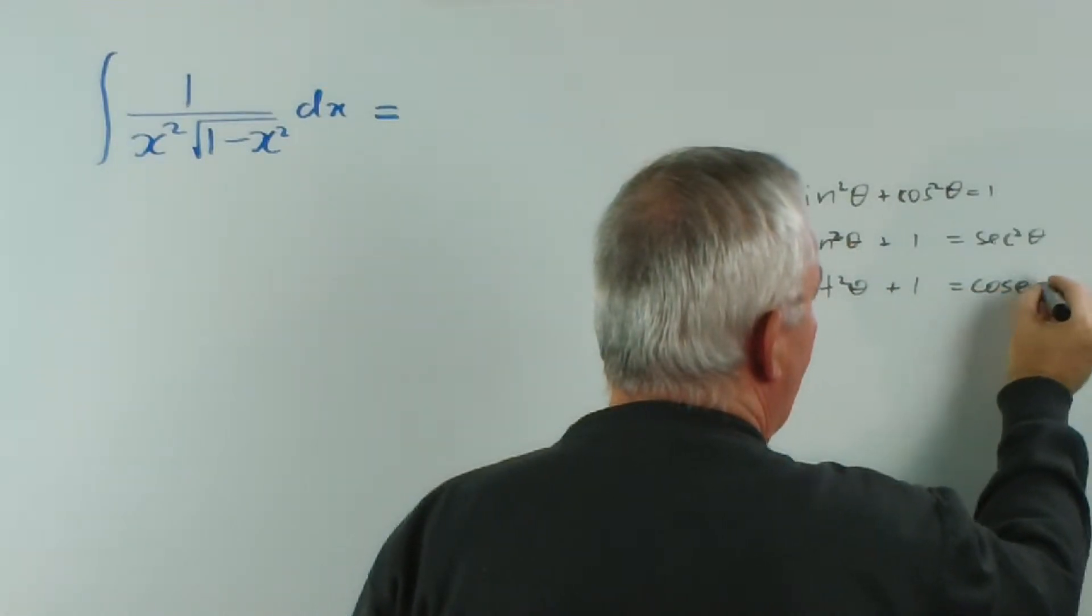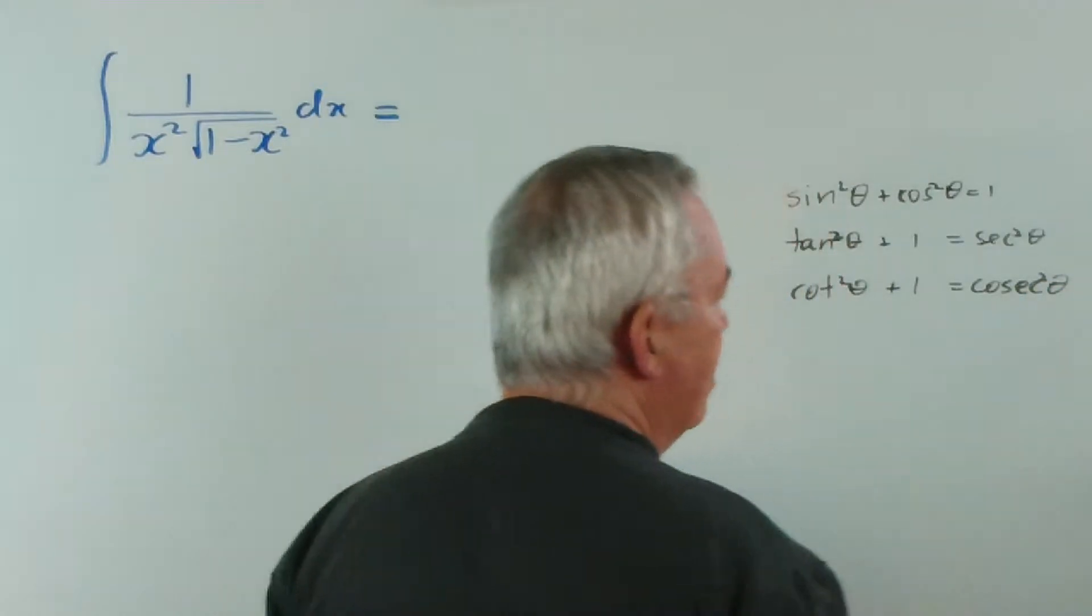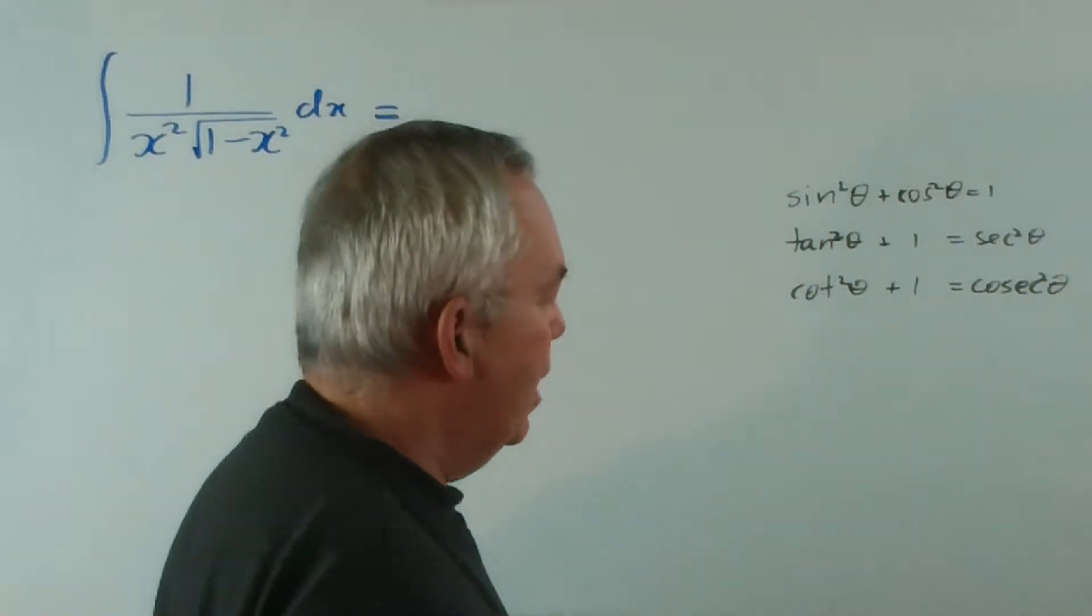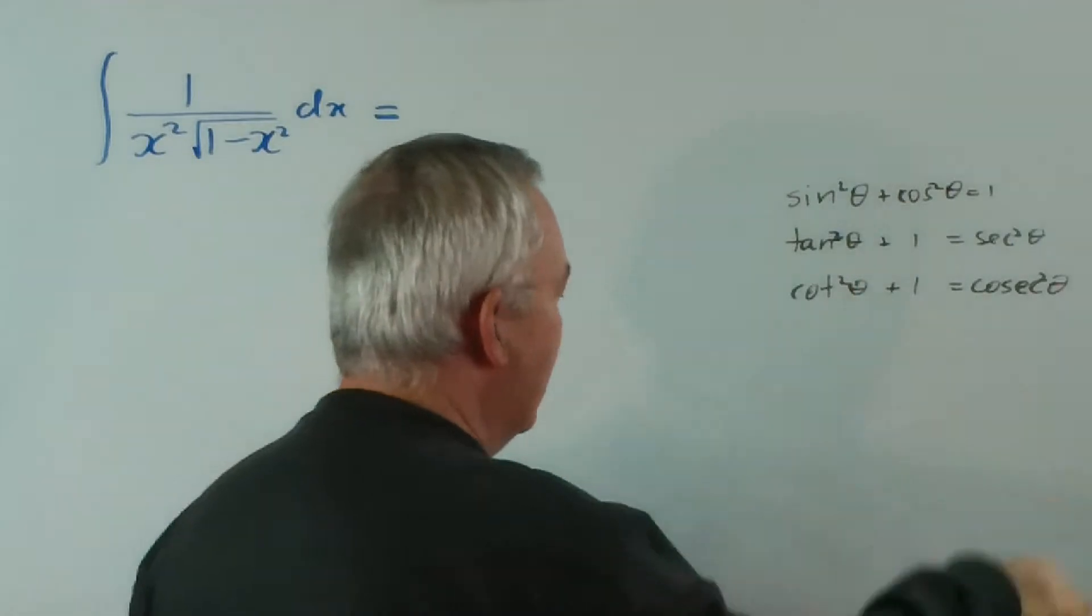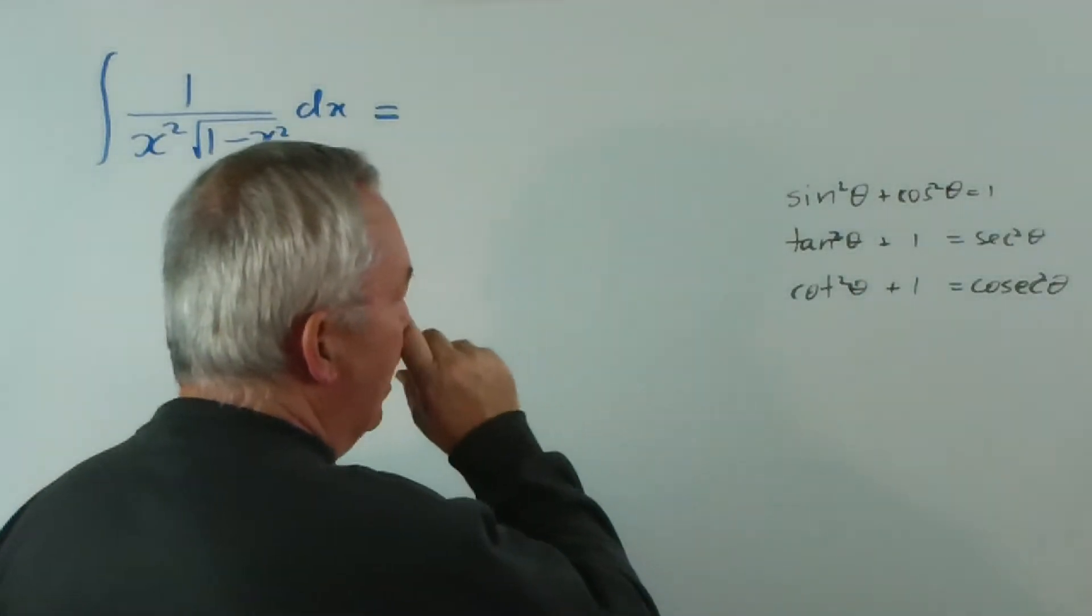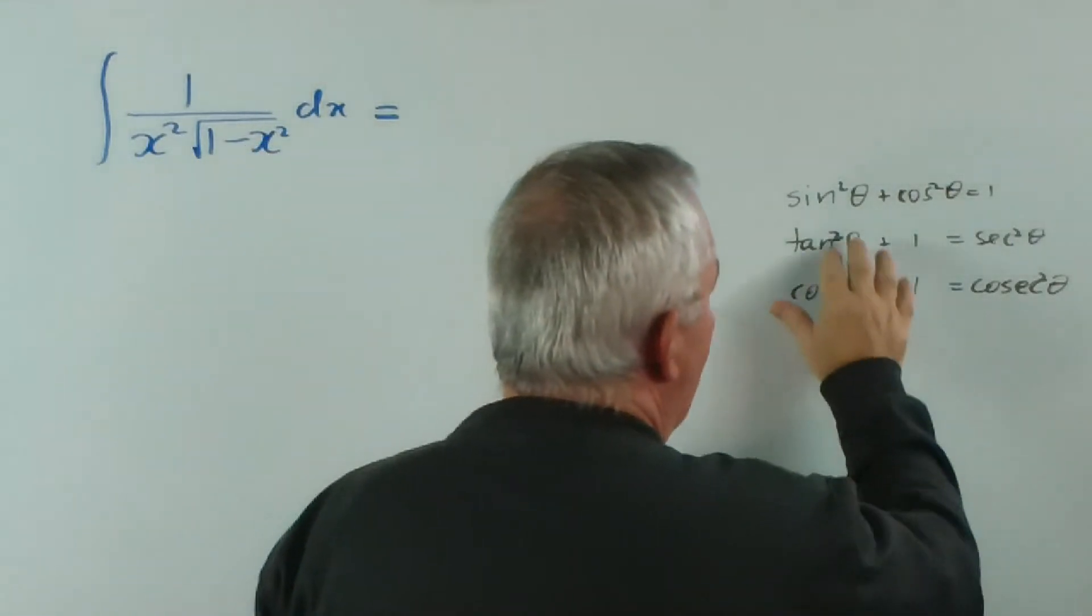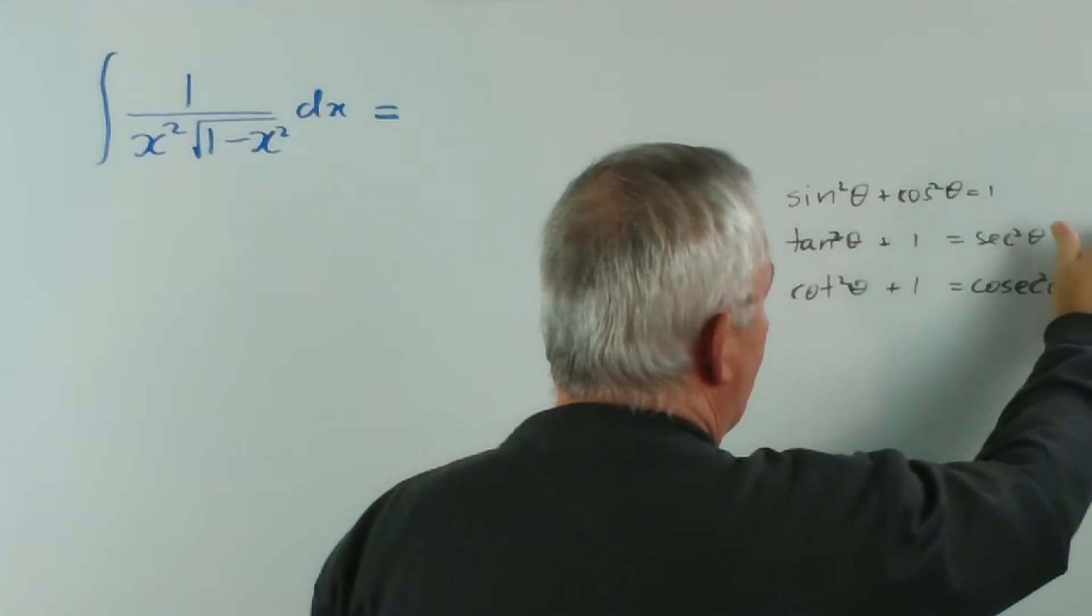Now, in my country, we write cosec²θ this way. If you're in the states, it'll just be C-S-C. Please don't let that bother you. What I want to point out is this. If I move one of these expressions over the other side, I get a negative expression.